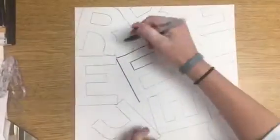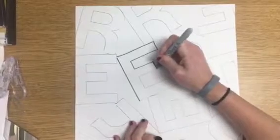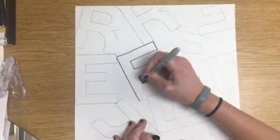Our next step is simply to outline all of our positive space with a Sharpie marker as best you can.